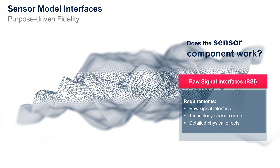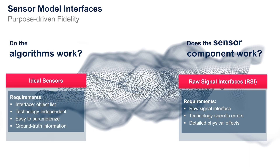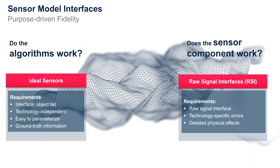But there are other equally important sensor model classes. Ideal sensor models act as ground truth extractors for relevant objects such as traffic objects, road markings, traffic signs, and so on.